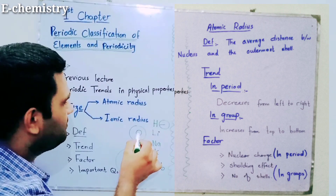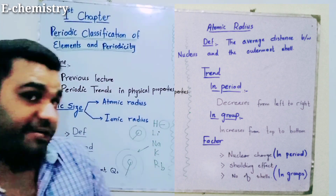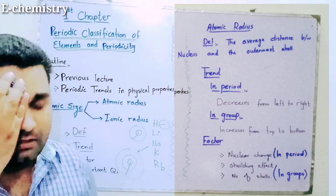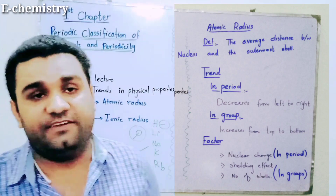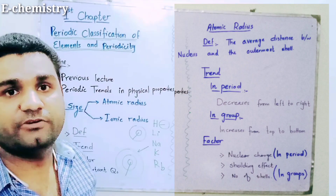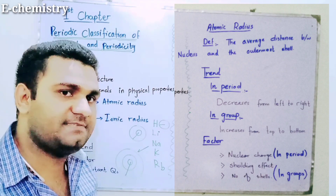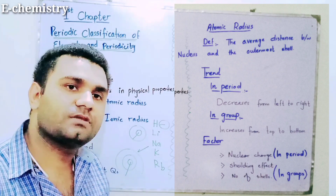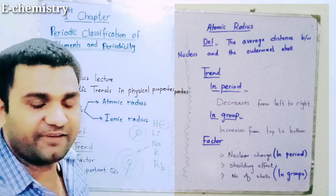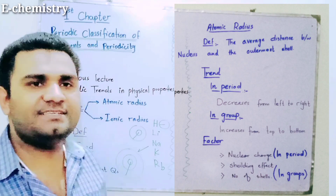The outer shell is farther from the nucleus, which increases size. The next factor is the shielding effect — also called the screening effect. The greater the inner shells, the greater the shielding. The shielding effect is the second factor contributing to size increase down the group.